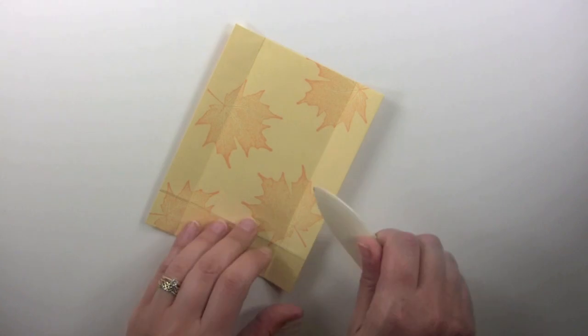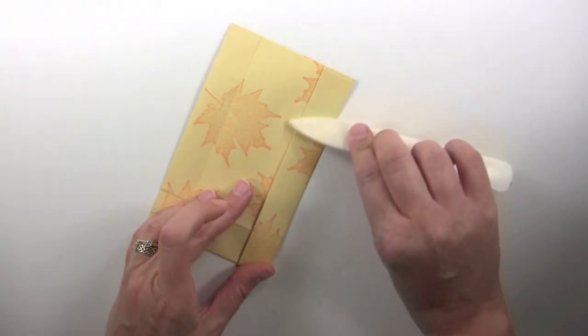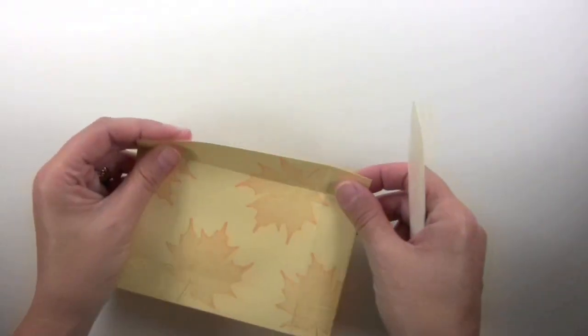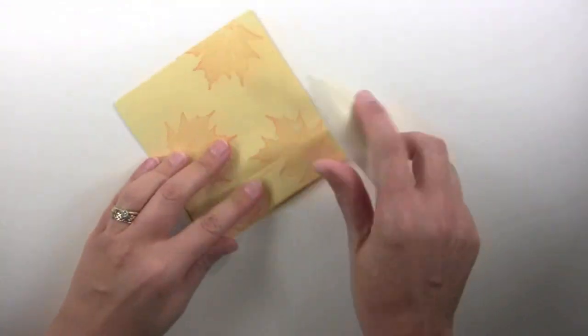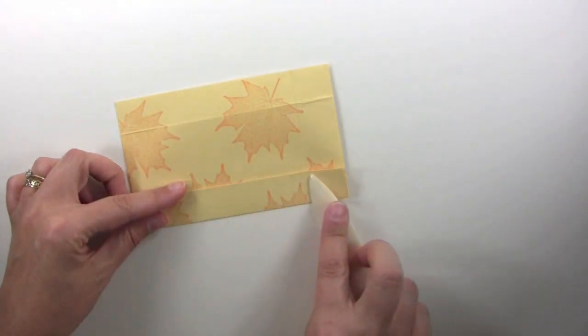The next step is you're going to want to take a bone folder and your fingers, and you're going to really want to score all of those fold lines really well. Do it both directions on each side, and you'll see why this is important later when we go to fold the bag.